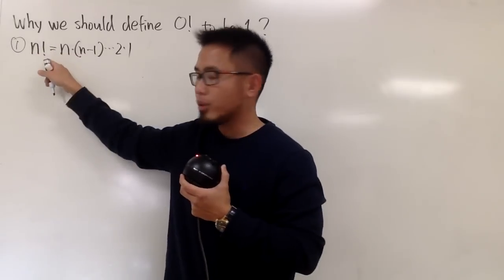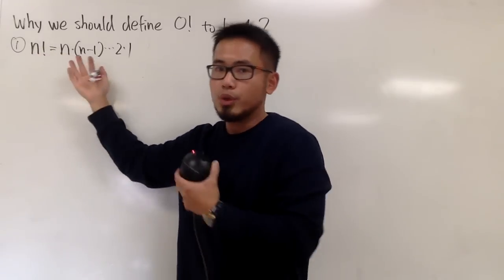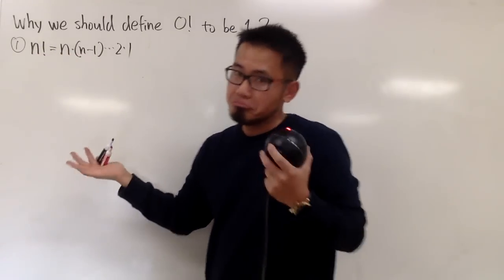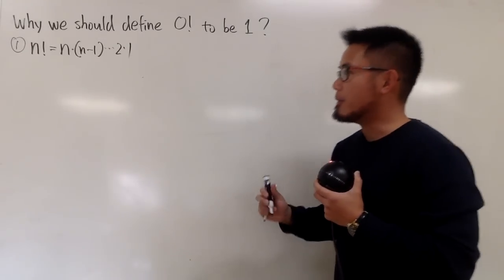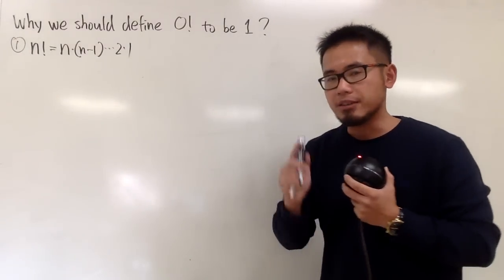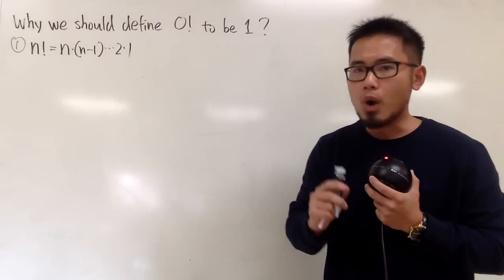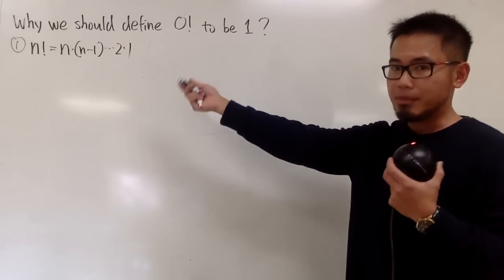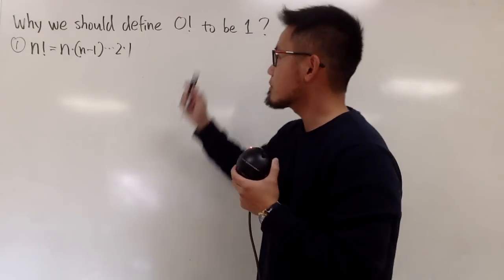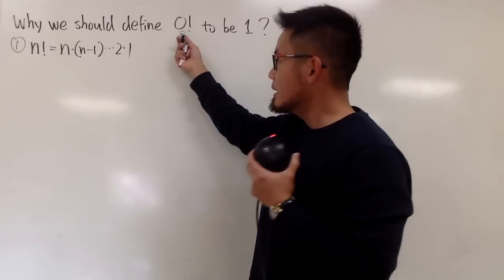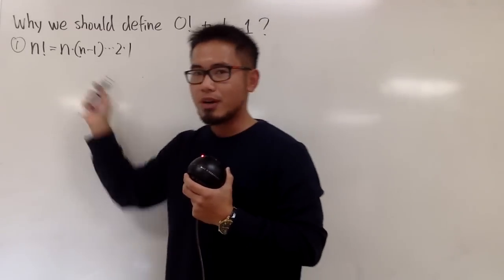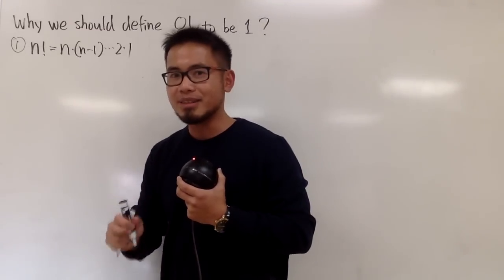If you have 0 factorial, what should we put on the right-hand side? It doesn't work. However, 0 factorial is defined to be 1, and we will see a pattern for it — because we must define 0 factorial to be 1, otherwise it's not going to follow this nice pattern.